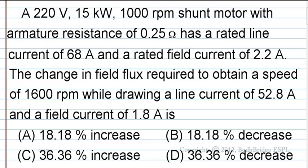A 220V, 50KW, 1000RPM shunt motor with armature resistance of 0.25 Ohm has a rated line current of 68A and a rated field current of 2.2A. The change in field flux required to obtain a speed of 1600RPM while drawing a line current of 52.8A and a field current of 1.8A is: A) 18.18% increase, B) 18.18% decrease, C) 36.36% increase, D) 36.36% decrease.